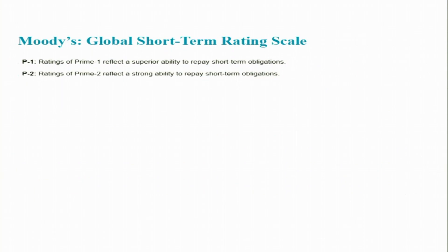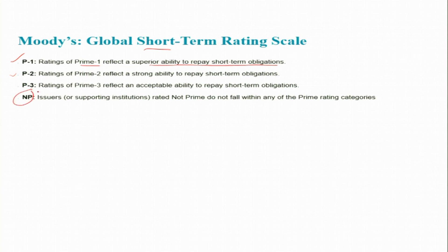Moody's also publishes a global short-term rating scale. The notation used is P-1 (Prime 1), reflecting superior ability to repay short-term obligations, followed by P-2, P-3, and finally NP (Not Prime), meaning the default risk is very high. These can be compared to the long-term scale: triple-A is roughly equivalent to P-1, while A3 to Baa roughly corresponds to P-2 or P-3.